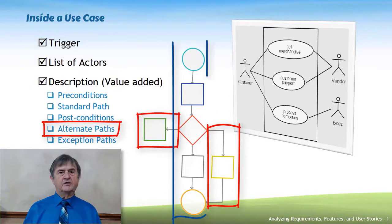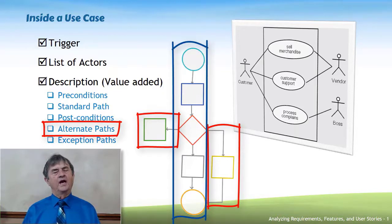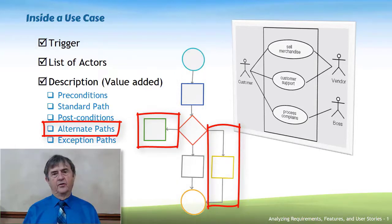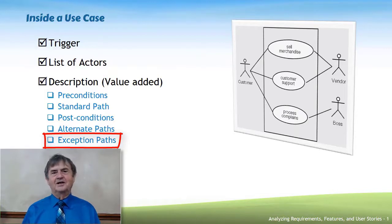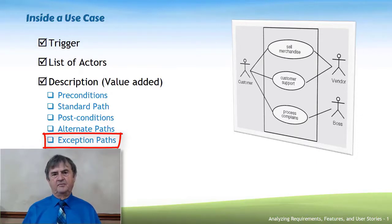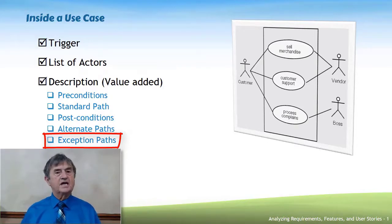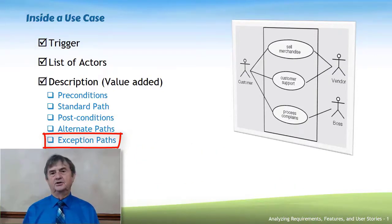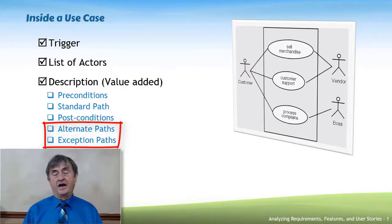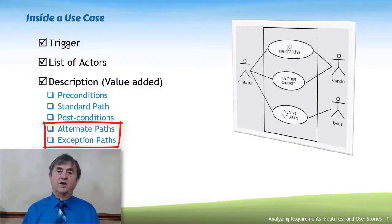Post conditions are the conditions that will be created by the use case concluding successfully. Alternate paths are different ways of getting to the same outcome — although they do things a little differently than the standard path, they always create the same post condition. Exception paths are different: an exception path occurs when certain things happen while the use case is being performed that cause it to not complete successfully. So exception paths always have a different post condition than the standard path and alternate paths. An alternate path always returns to the standard path; an exception will not return to it.